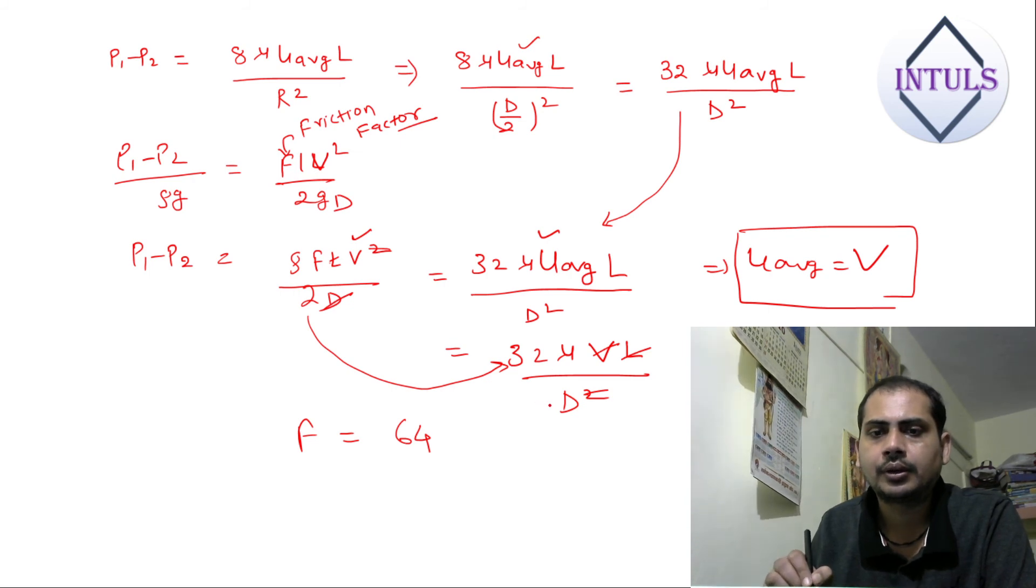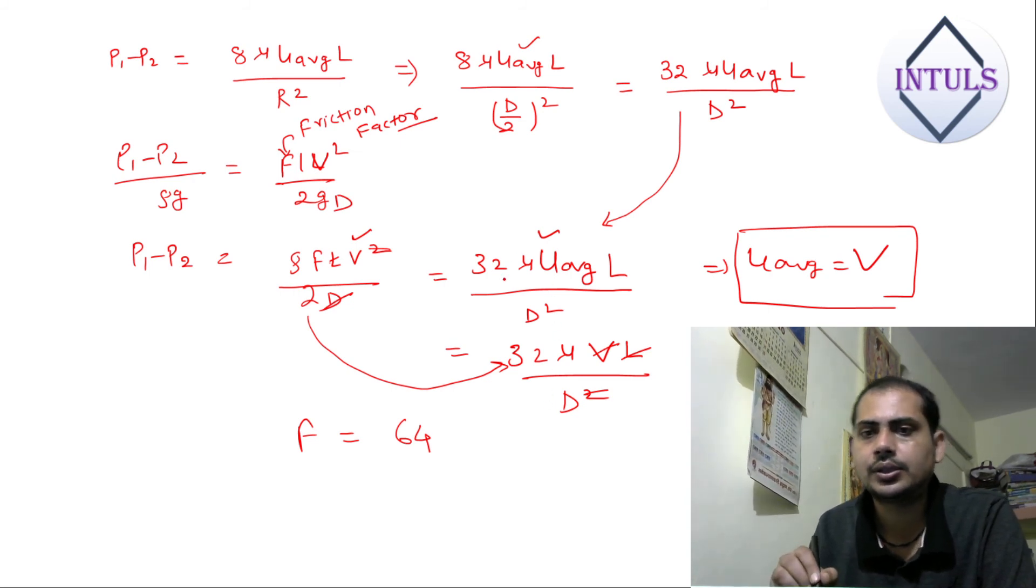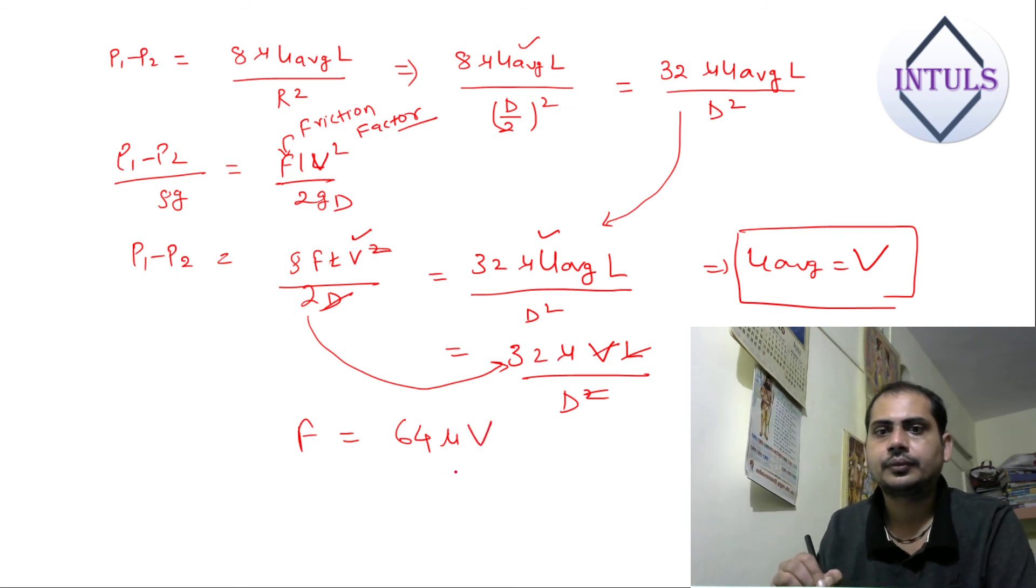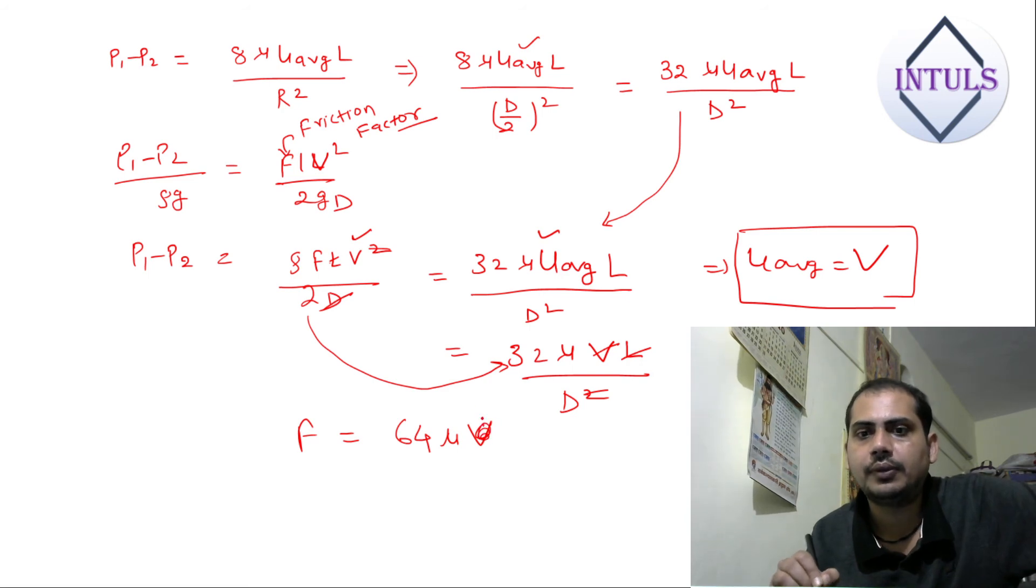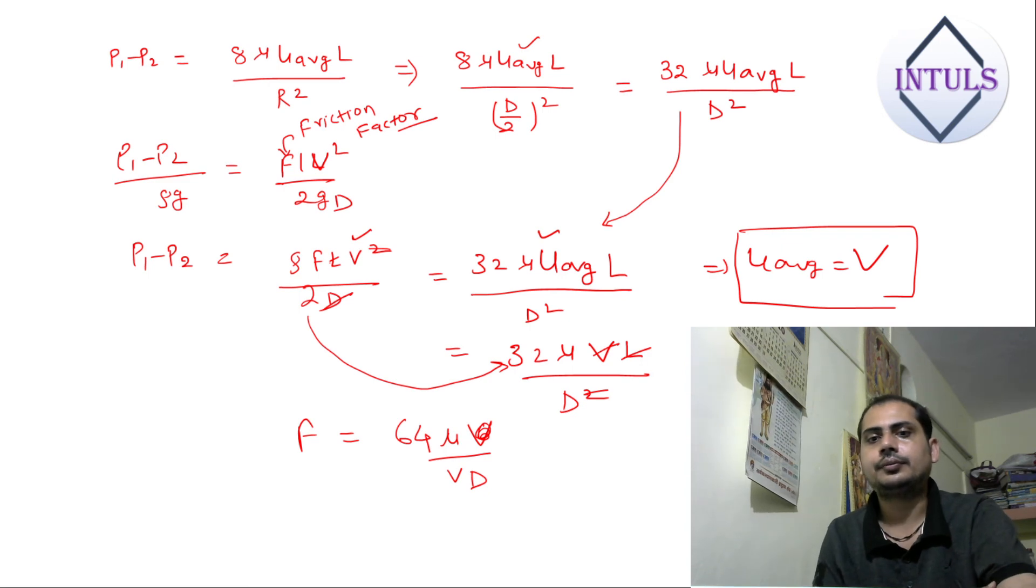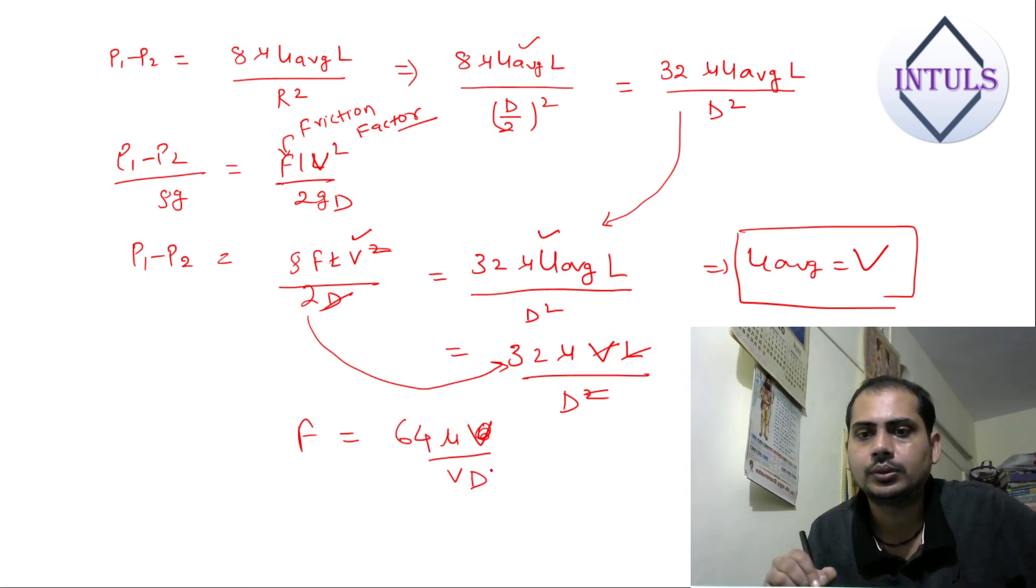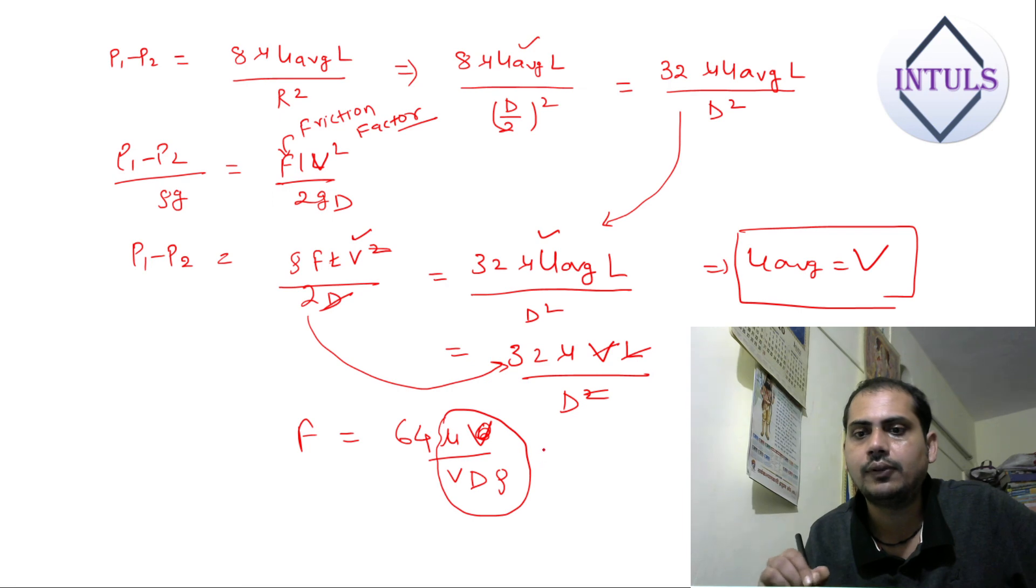Now what will remain? What will remain here is 64, this is mu, u_average or V. V will not remain, we will cut. D and rho. So this quantity is inverse of Reynolds number. Reynolds number is rho V D by mu. So I can write f is equal to 64 by R, very important.